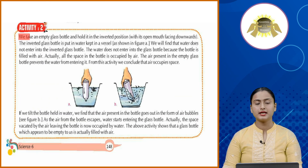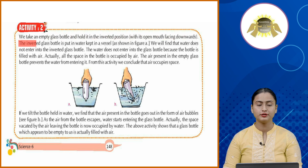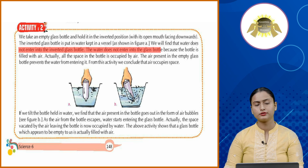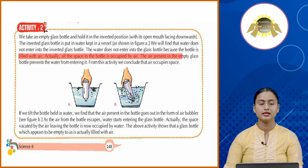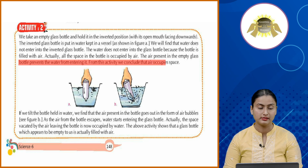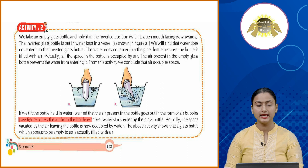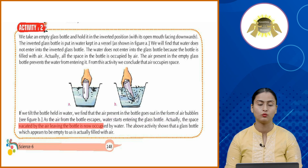Activity 2: Take an empty glass bottle and hold it in the inverted position with its open mouth facing downwards. Put the inverted glass bottle in water kept in a vessel. We find that water does not enter the inverted glass bottle because the bottle is filled with air — all the space in the bottle is occupied by air. This shows that air occupies space. If we tilt the bottle, air escapes as bubbles and water starts entering.